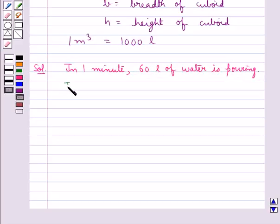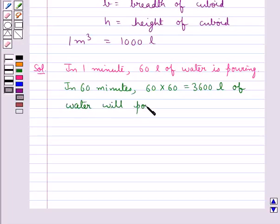So in 60 minutes, 60 multiplied by 60, that is equal to 3600 liters of water will pour. We know that 60 minutes is equal to 1 hour. So we say that in 1 hour, 3600 liters of water will pour.